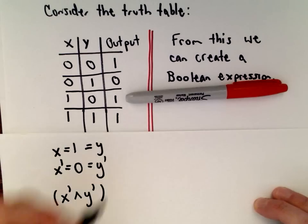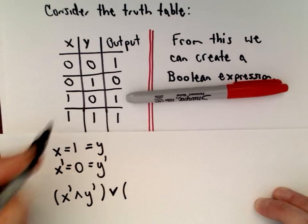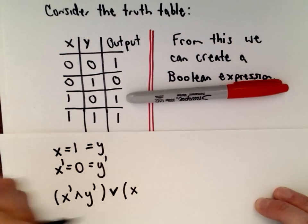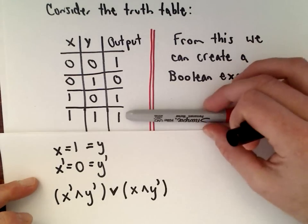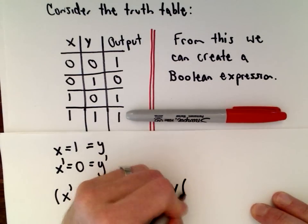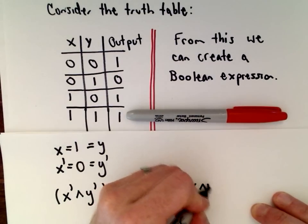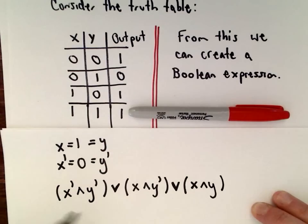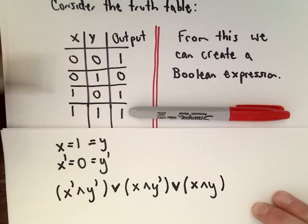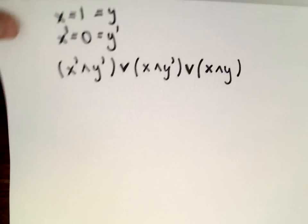Now for the third row — we connect these expressions with an OR symbol. Since x is 1, we just write x, and since y is 0, we write y prime. Moving to the fourth row, x is 1 so we write x, and y is also 1 so we write y. Reading this boolean expression, you can go back and reconstruct the truth table — that's why I said at the beginning they're all equivalent.